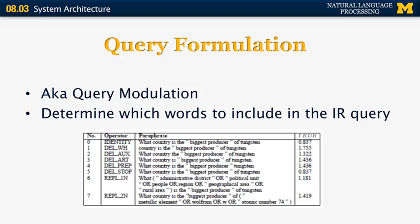For example, by removing double quotes, or by replacing names of words — tungsten was replaced by Wolfram because it's a synonym for that element, and tungsten was also replaced by atomic number 74. Again, this is all done using a database like WordNet.